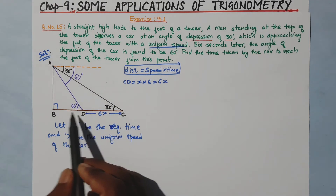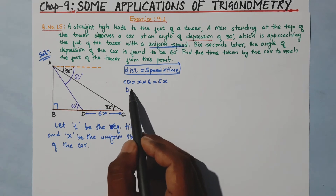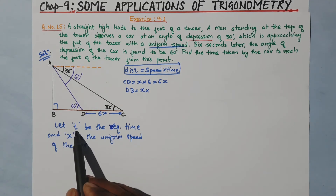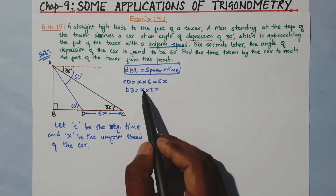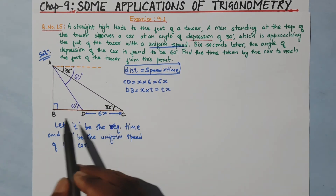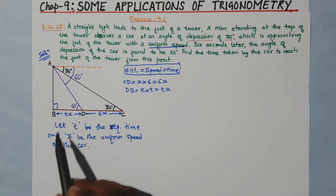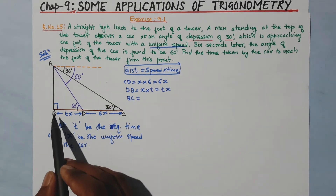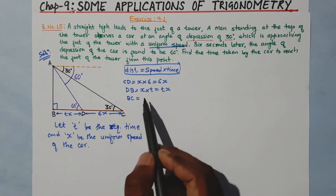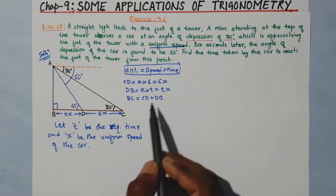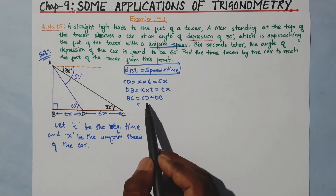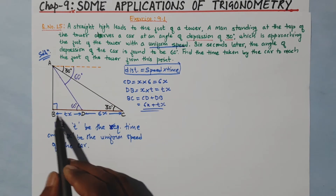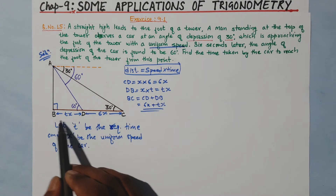Similarly, DB equals speed into time. Speed is x and time is T, so DB equals Tx. From the figure, BC equals CD plus DB. So BC equals 6x plus Tx.